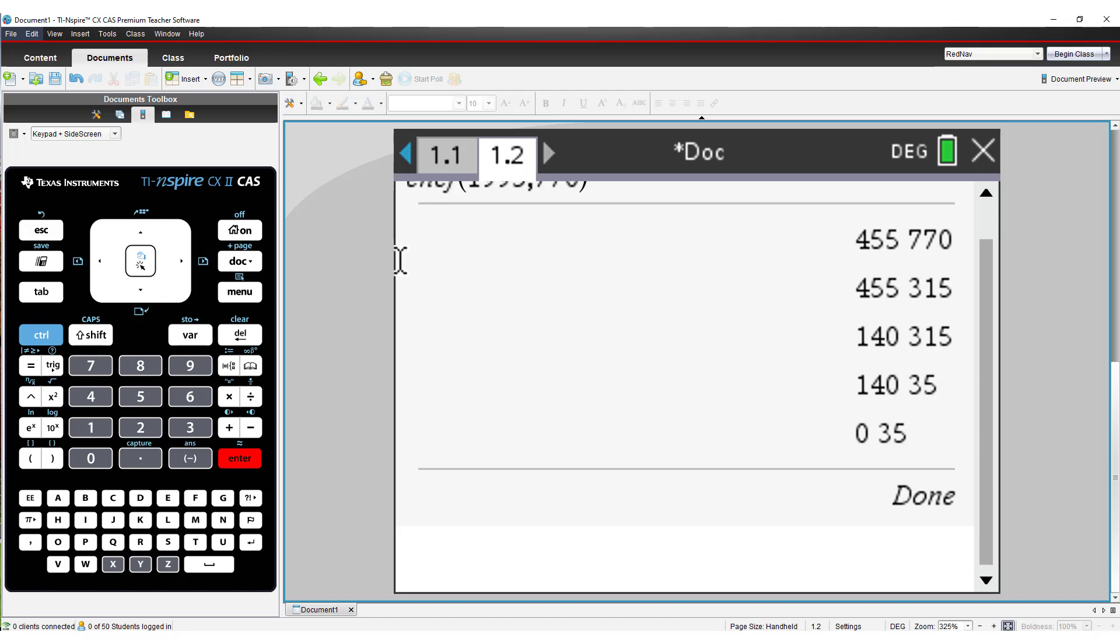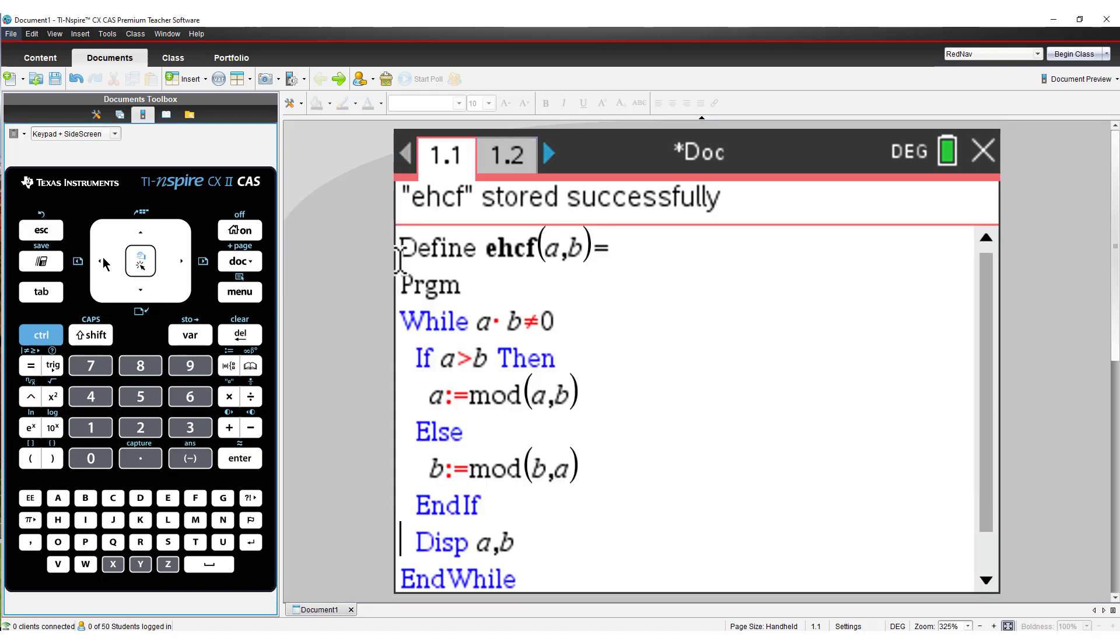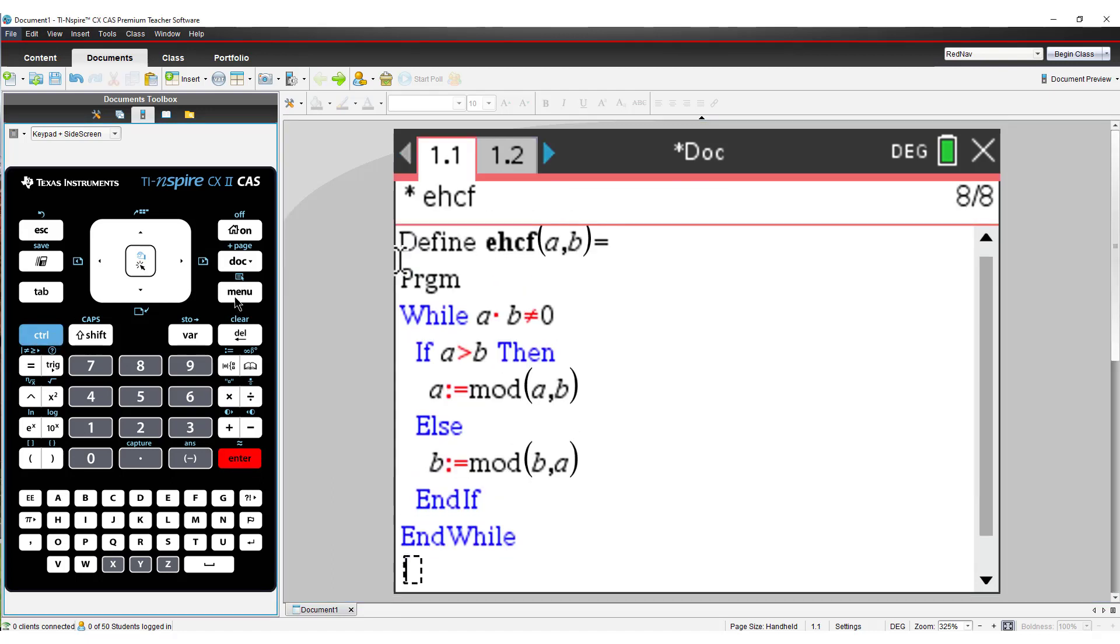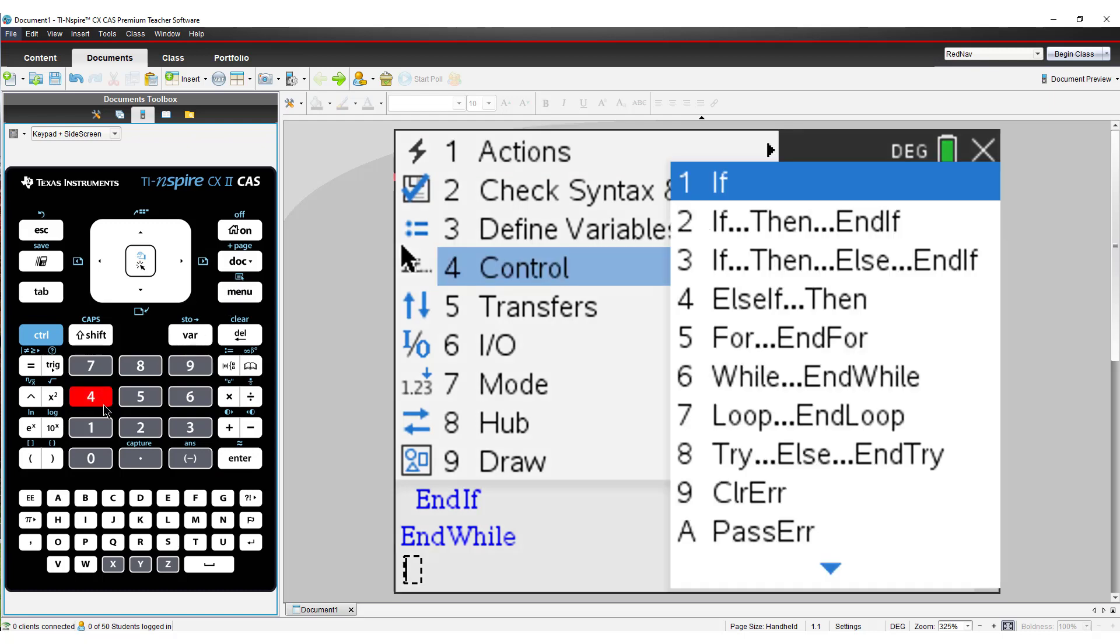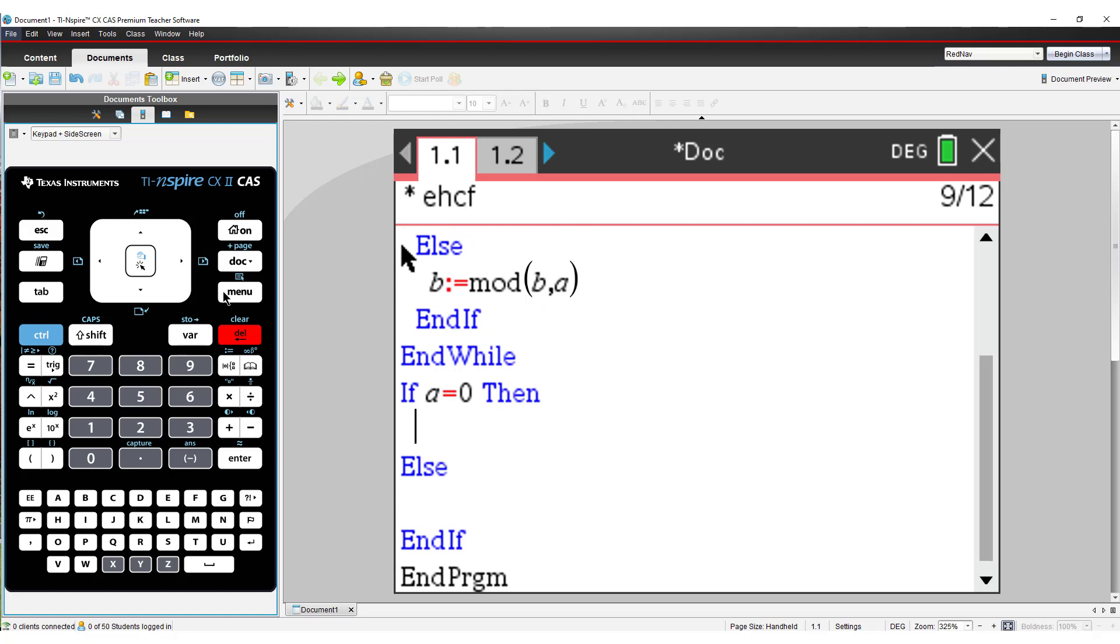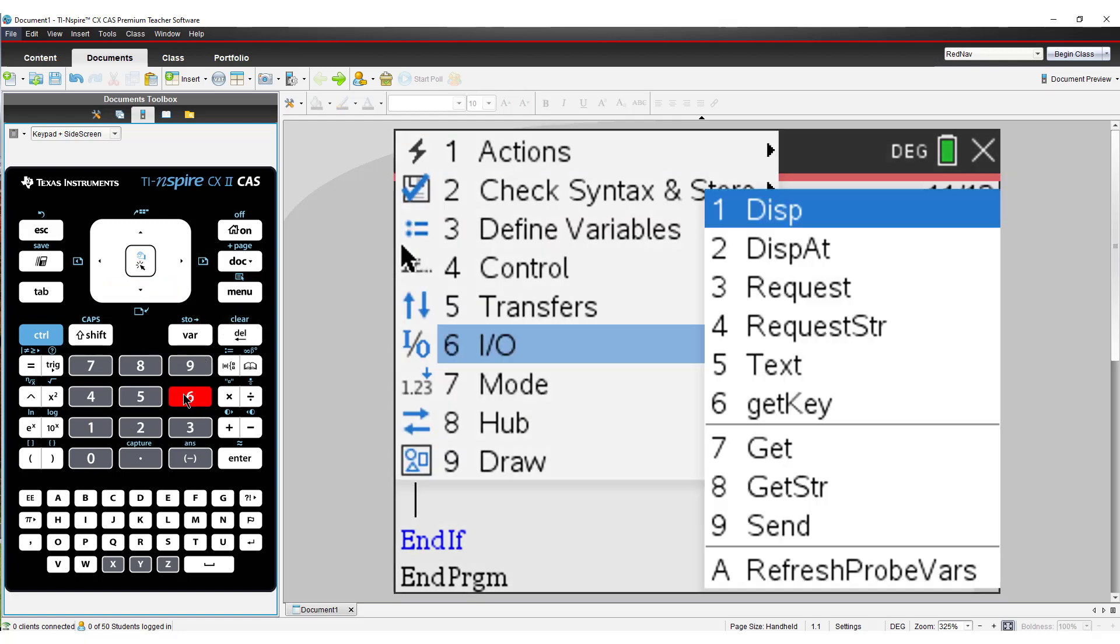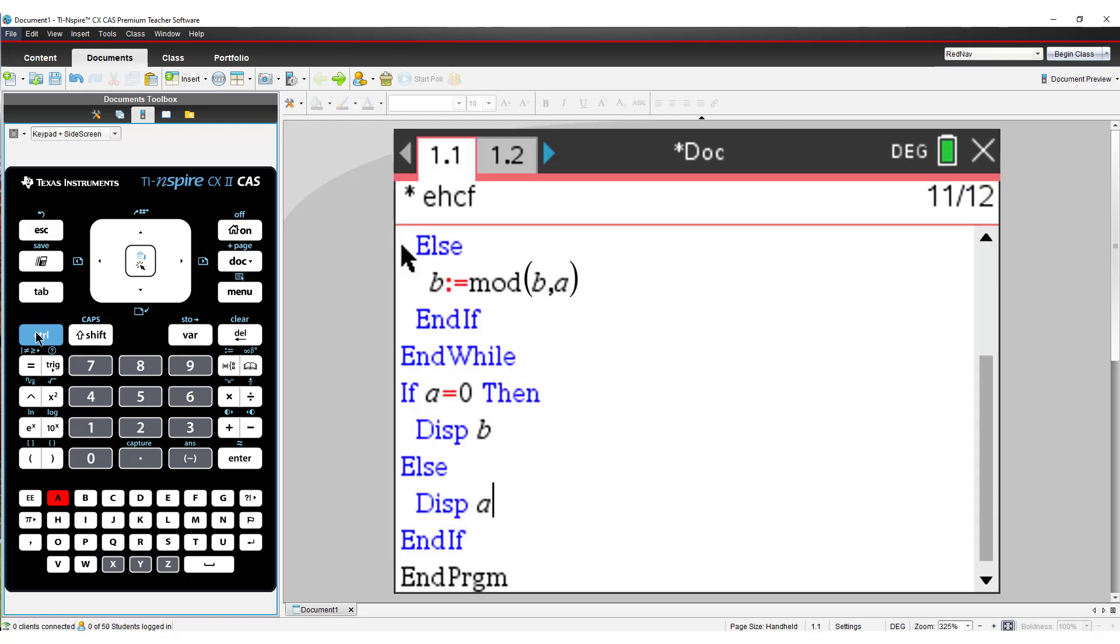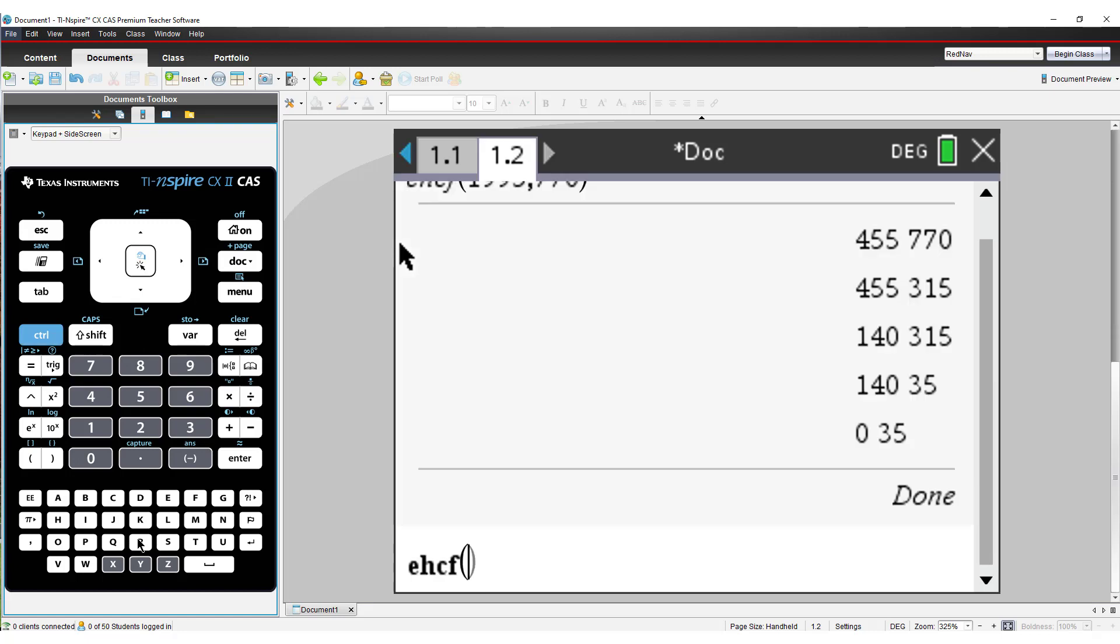We can shift the display command outside the loop and use an IF statement to only display the highest common factor. Now, our program is complete.